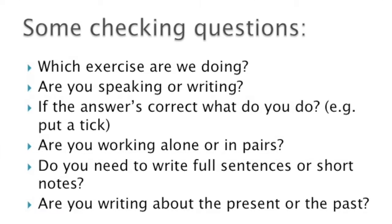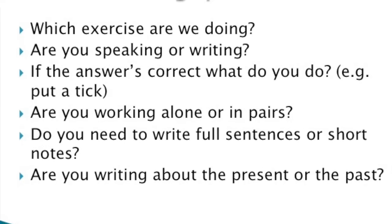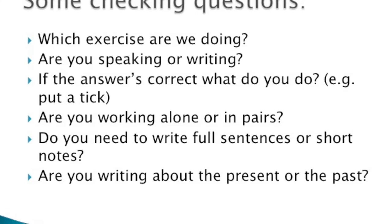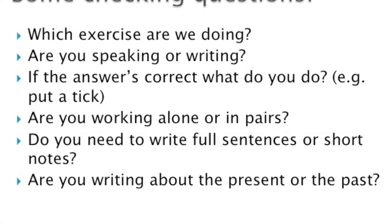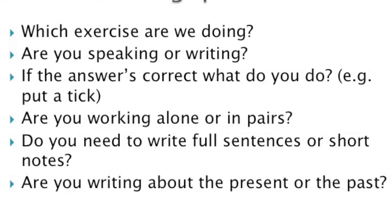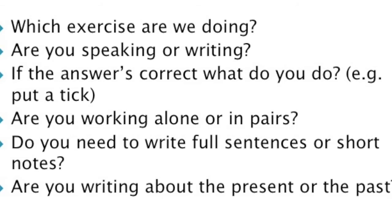This hard evidence comes from simple checking questions targeting the important points of the activity. For example: 'Which exercise are we doing?' — if there's more than one on the handout. 'Are we doing 2a or 2b?' — a simple closed question, a simple answer. These questions don't require a lot of language but give us evidence. 'Are we speaking or writing?' 'Do you circle or tick?' 'Are you working alone or in pairs?' 'Do you need full sentences or short notes?' 'Are you writing about the present or the past?'